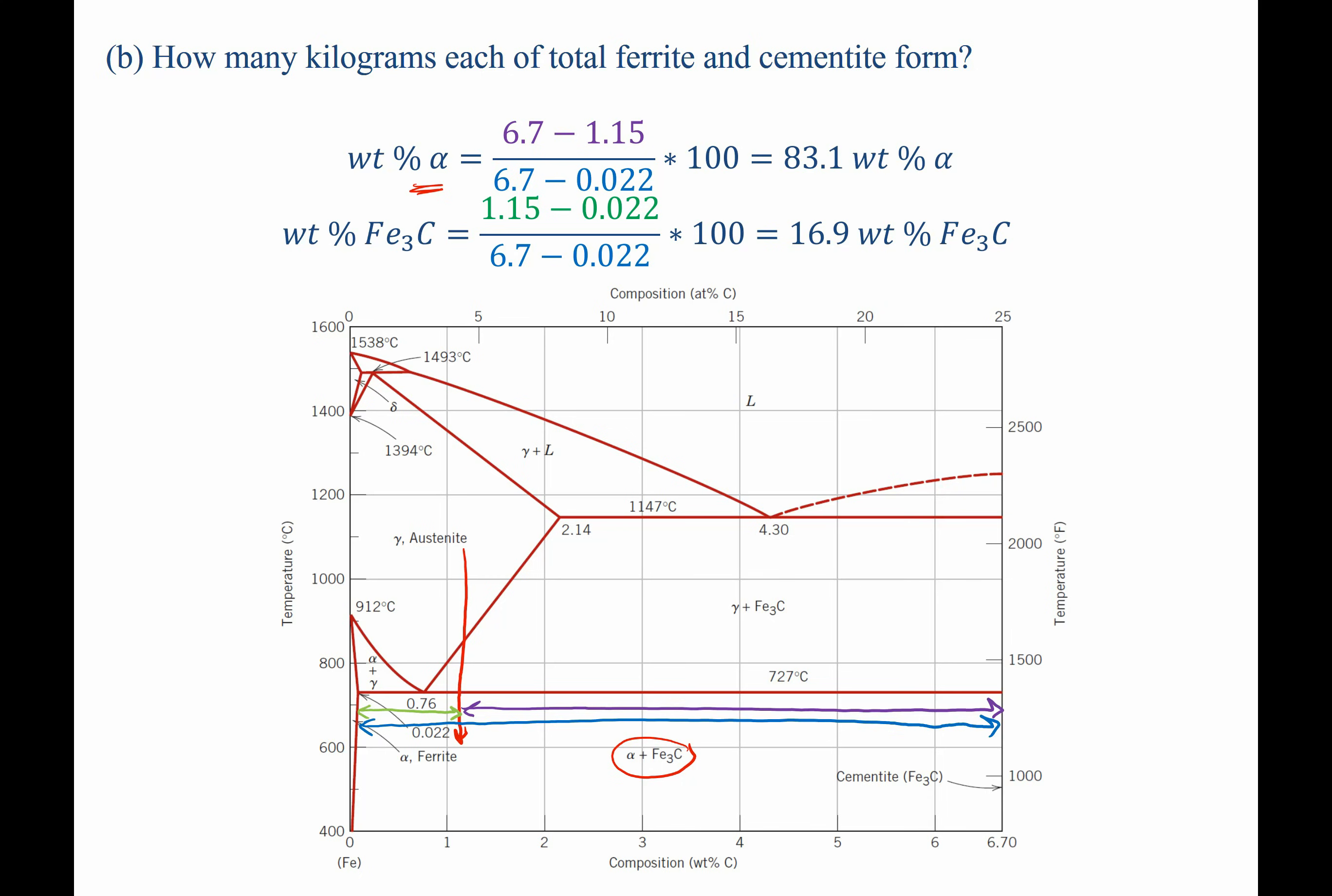That will be 6.7 minus 1.15. We're going to divide that by the total length, 6.7 minus 0.022. If now we want the weight percent of the carbide, iron carbide, cementite, then we're going to take the length opposite of it, which is the green section, divided by the total length, which is the blue section.